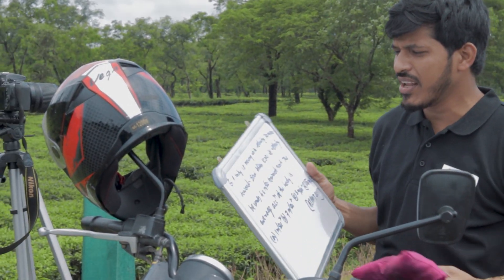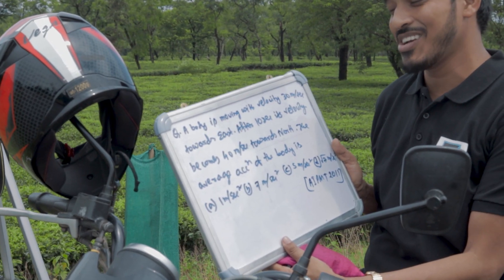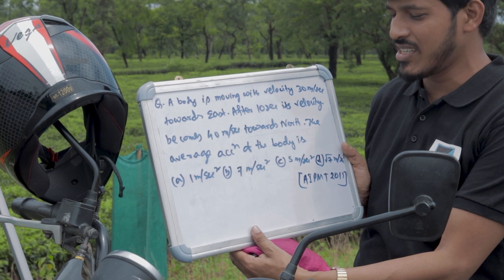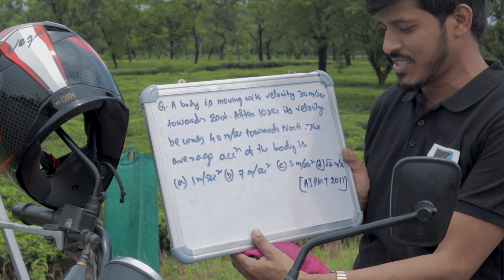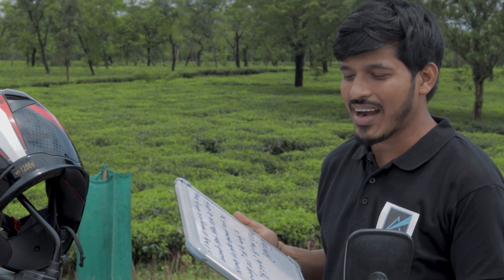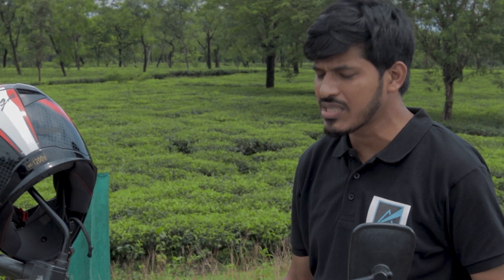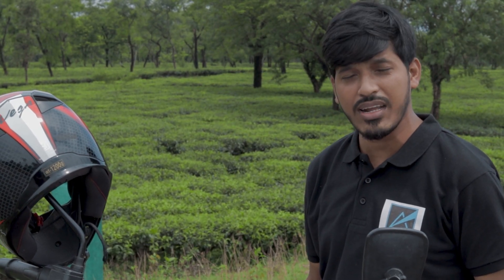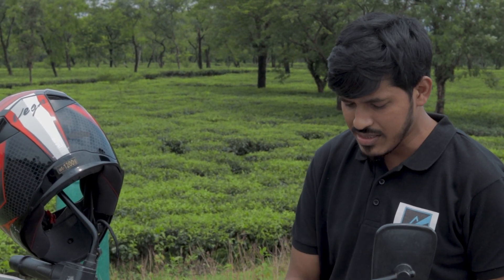Now let us solve another numerical from NEET. A body is moving with a velocity of 30 meters per second towards East. After 10 seconds, its velocity becomes 40 meters per second towards North. The options for average acceleration are: 1 m/s², 7 m/s², 5 m/s², or root 7 m/s². This is from AIPMT 2011. Let us solve this.